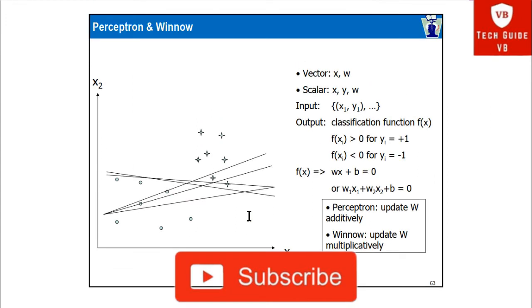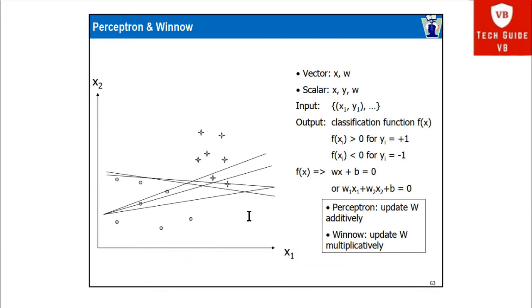This is the diagram for the perceptron. In the perceptron, we update the weight W additively.